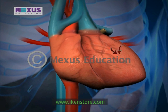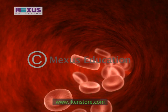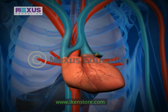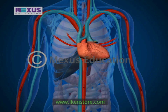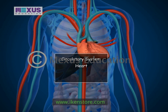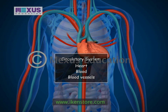The main job of the heart is to pump blood through a network of blood vessels. These blood vessels form a loop that starts at the heart, goes out through your body, and then ends up back at the heart again. Together, the heart and blood vessels are part of the circulatory system.